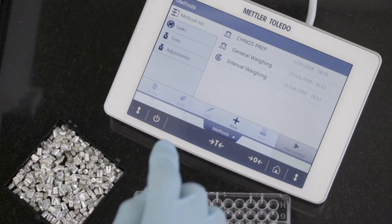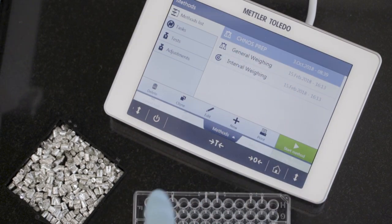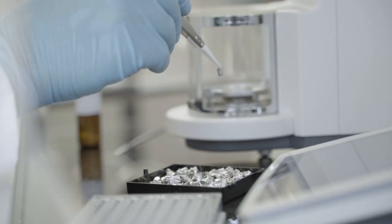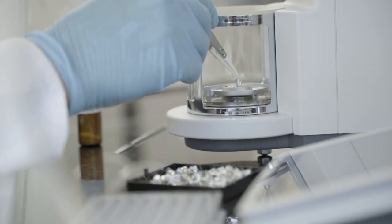Saved weighing methods ensure correct procedures are followed. The automated doors are operated with the wave of a hand, making weighing out the sample into the tiny crucibles faster and more ergonomic.